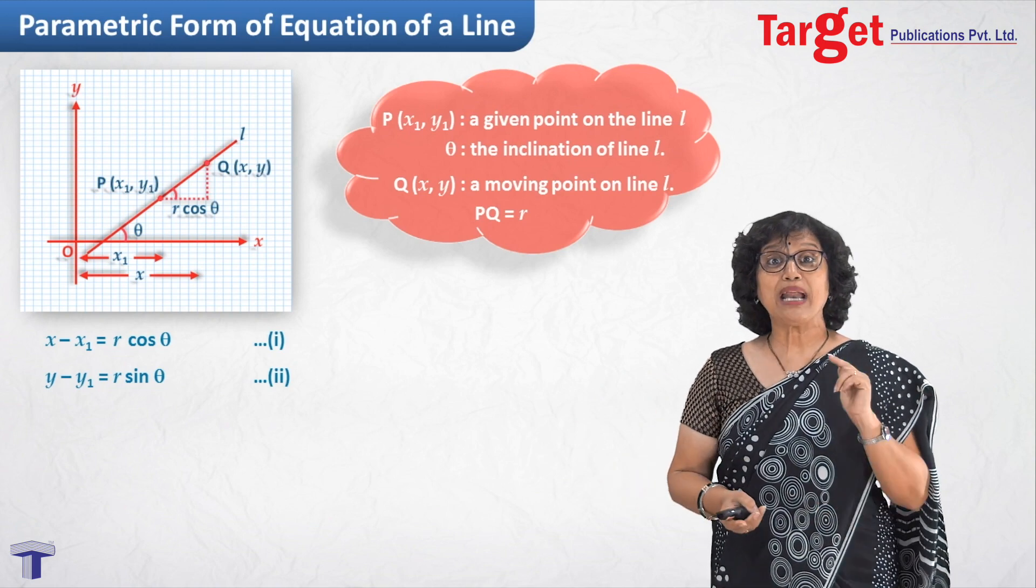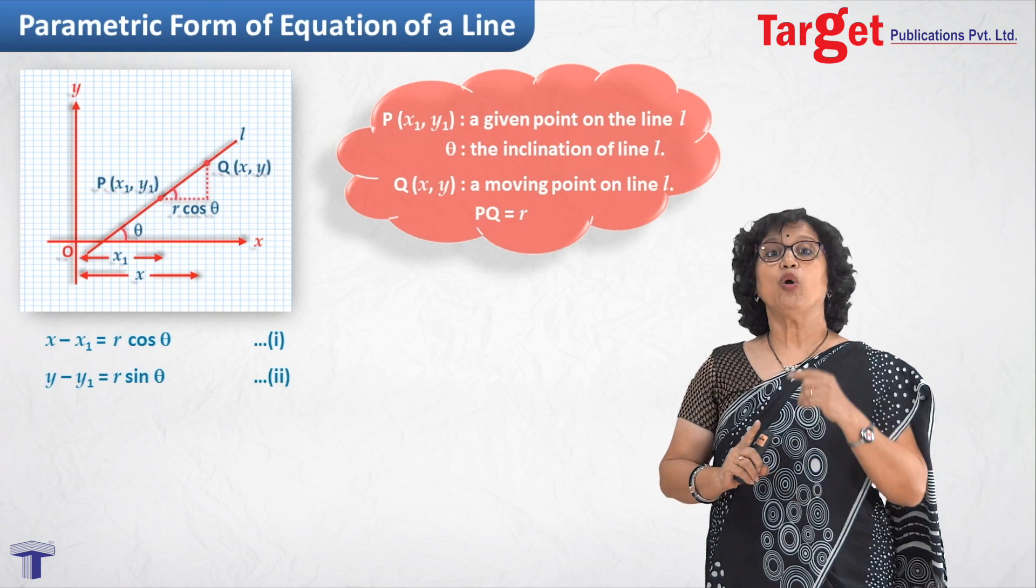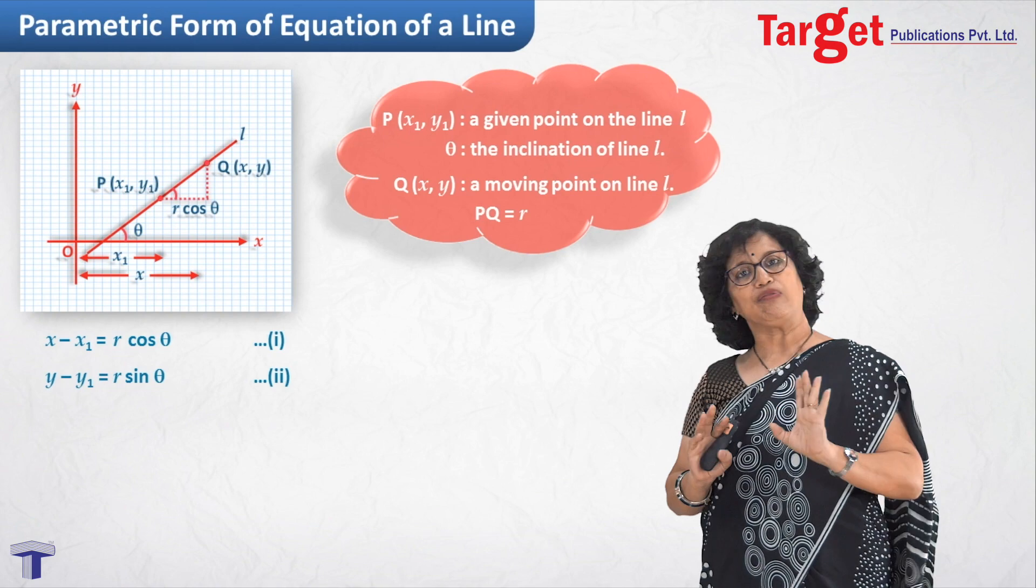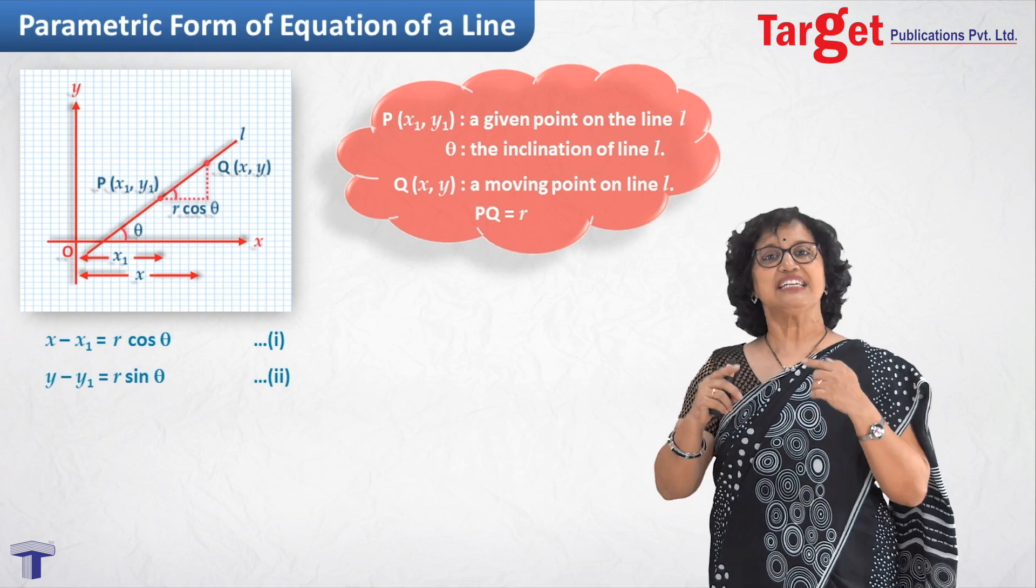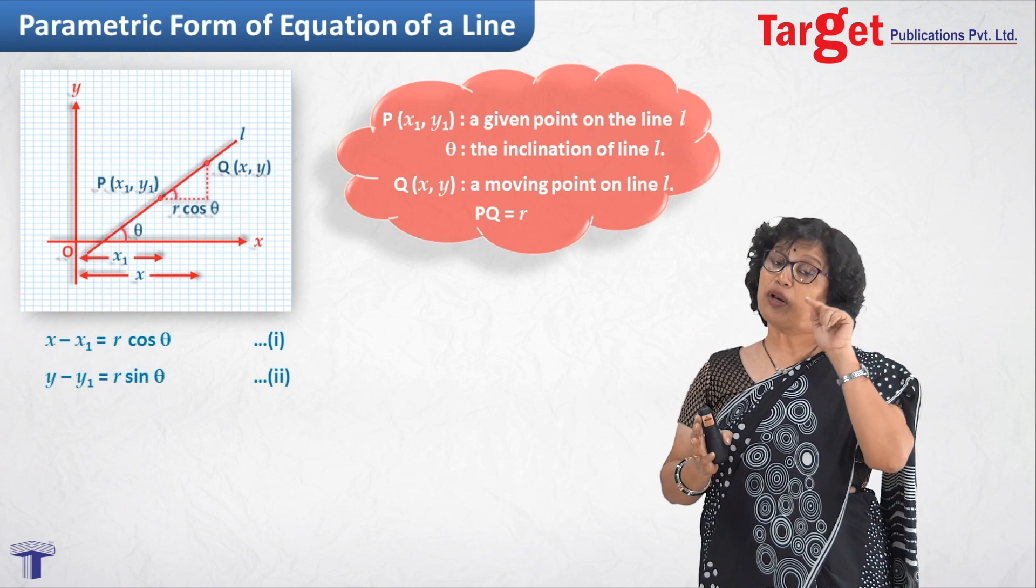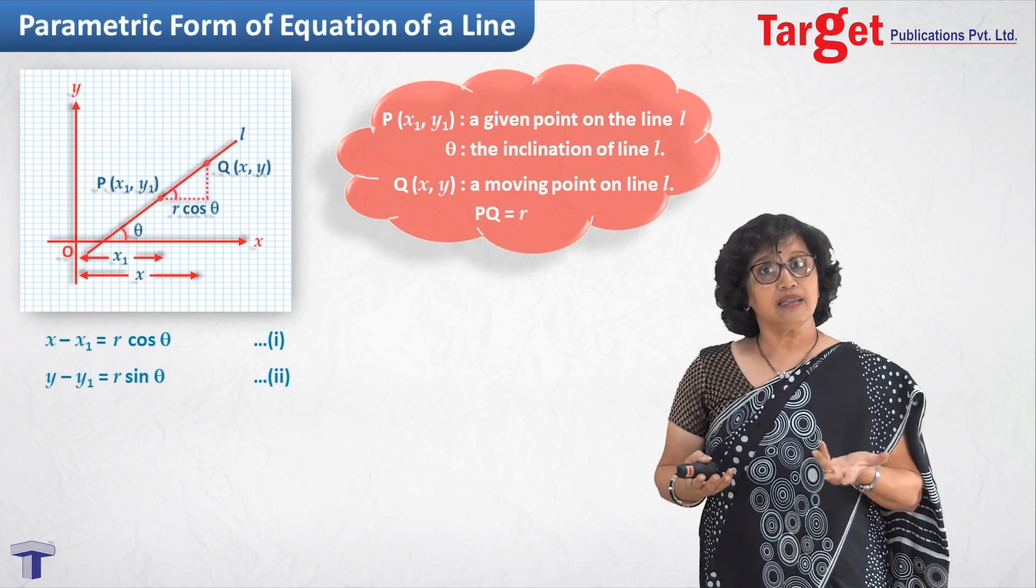Then where is the parameter here? Parameter is r. As point Q changes its position, obviously distance PQ will change. For a particular position, it will be a constant thing. That means it is a variable which takes various values, but for a particular position, it will be a fixed quantity. So obviously r is the parameter.